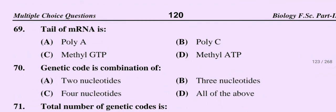Question number 69: Tail of messenger RNA is — Option A: poly A, Option B: poly C, Option C: methyl GTP, Option D: methyl ATP. So the correct option is Option A, poly A.